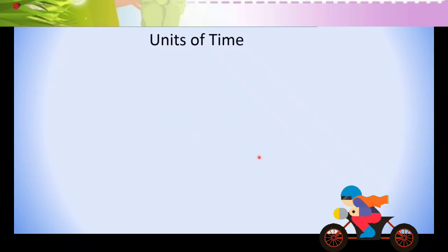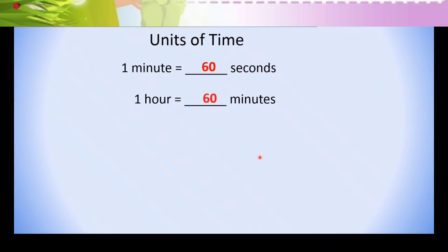Let's check these conversions. Unit of time: One minute is equal to 60 seconds. One hour is equal to 60 minutes. One day is equal to 24 hours. One week is equal to 7 days. One month is equal to 4 weeks.